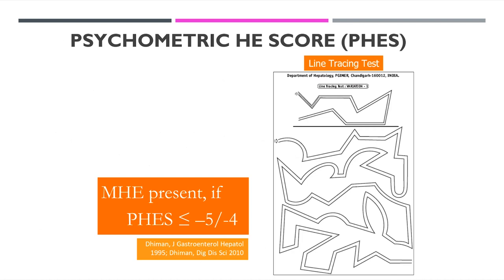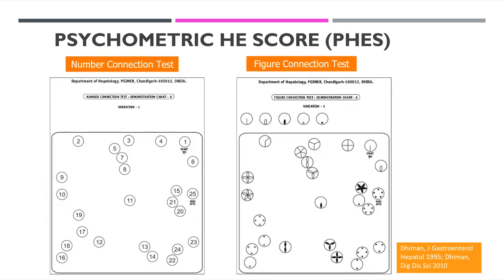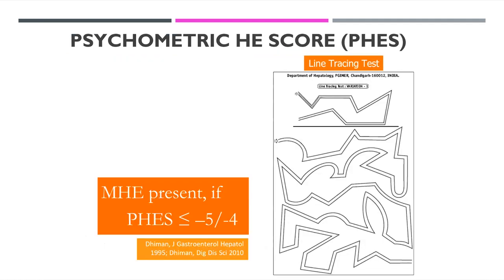In the Number Connection Test B, English alphabets were difficult for less literate patients, so we devised the Figure Connection Test, which worked well. The cutoff for MHE diagnosis in most places is minus four, but in our population we found a cutoff of equal to or less than minus five. When you validate in your own population you may get different readings.